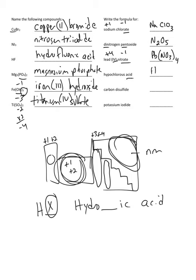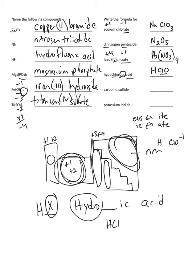Hypochlorous acid: we see the word 'acid,' so it begins with H. We do not see 'hydro' in the name, which tells me that 'chlorous' contains chlorine and oxygen — so it contains a polyatomic ion. If it were hydrochloric acid it would simply be HCl. Because it's not hydro-blank-ic acid, I know it contains the polyatomic ion ClO, which is hypochlorite. With acids, if the name ends in '-ous,' the polyatomic ion ends in '-ite.' Hypochlorite has a charge of negative one, hydrogen is plus one — so the formula is HClO, hypochlorous acid.